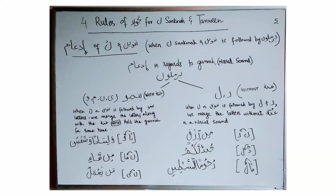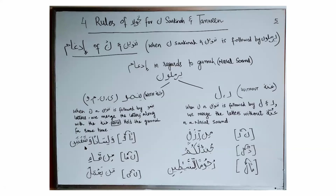Now let's see examples of Idgham with Gunna. For the verse containing Tanween followed by Waw: I should not say it without merging; rather, I merge the Sakin Noon hidden in Tanween with Waw along with the nasal sound, hold the Gunna, and recite: Walisa na'u wa shafatai. In the next example, Mimma'in — merging letter Noon with Mim — you can hear the Gunna, so this Idgham is happening with the nasal sound.